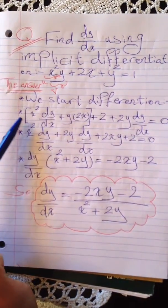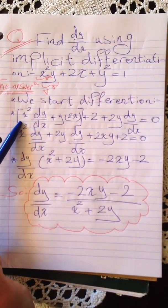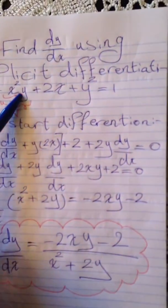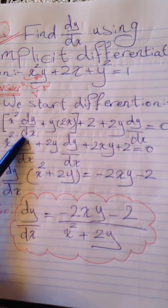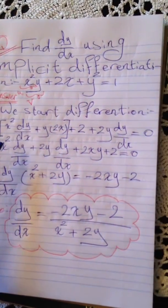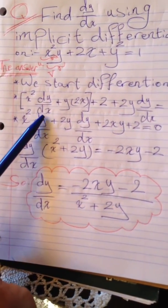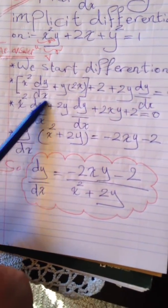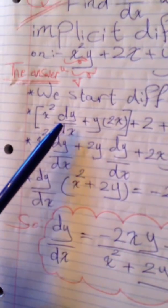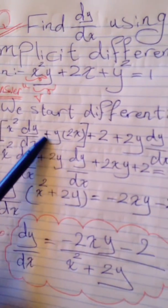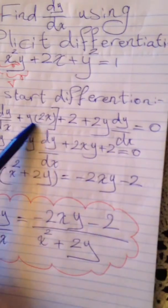We start differentiation by keeping the first term x² and taking the derivative of the second y, which is dy/dx. Remember, in implicit differentiation you derive everything with respect to x. Keep the first, take the derivative of the second, plus keep the second and take the derivative of the first.